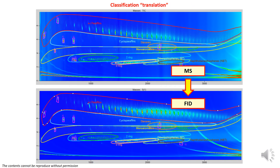The template created using the classification and mass spectral filter tools can be easily translated from the MS detector to the FID detector for quantitative purposes.